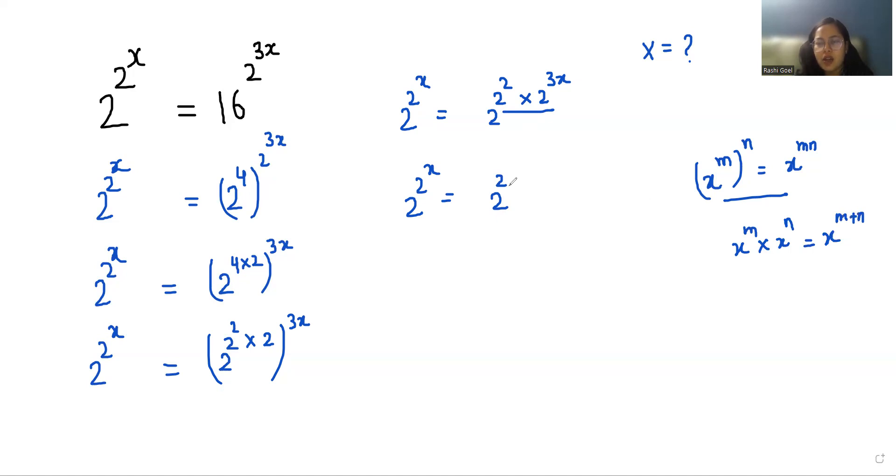as x^(m+n), so it becomes 2^(2+3x). Now if we compare both sides, if the bases are equal their powers are also equal, so x equals 2